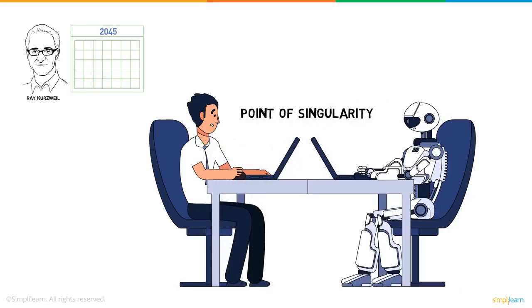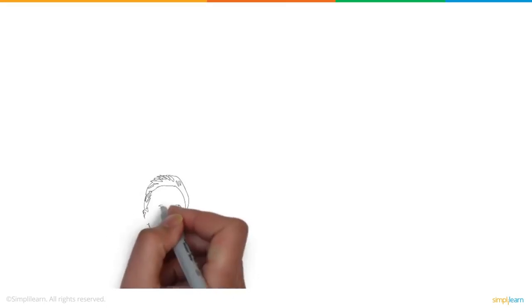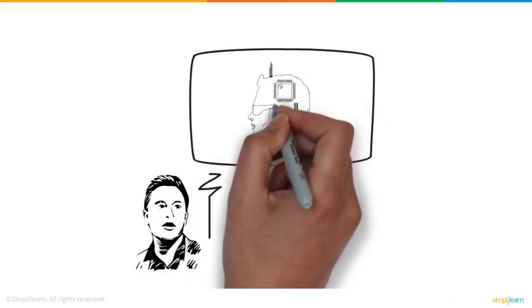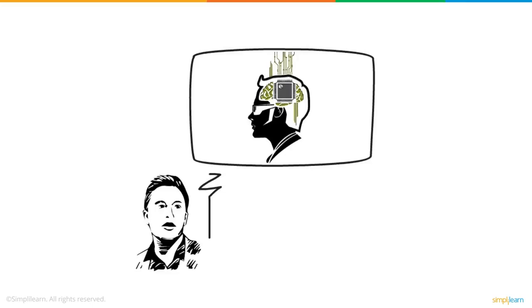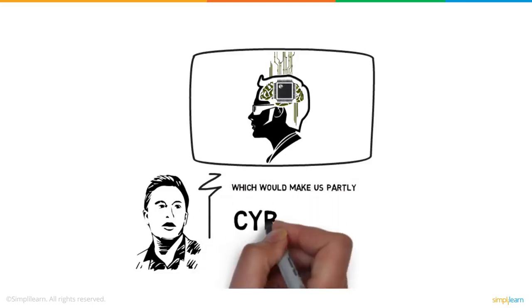Well, that's not all. In fact, Elon Musk predicts that the human mind and body will be enhanced by AI implants, which would make us partly cyborgs.